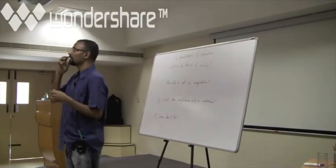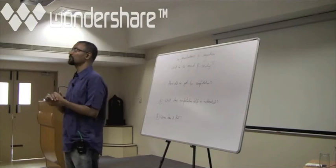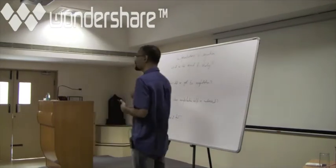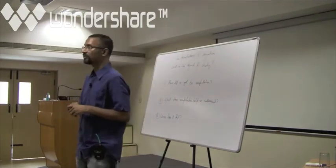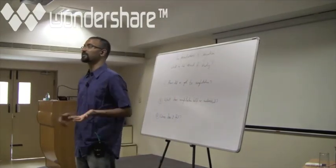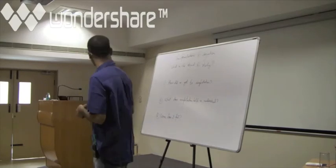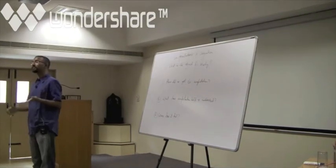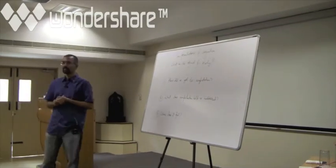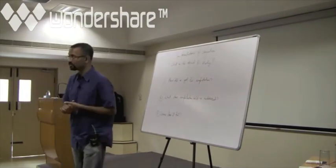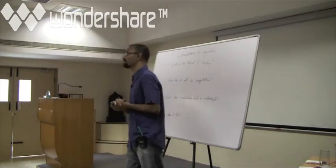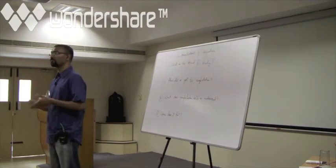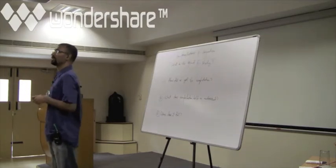I'm going to cover the overall structure of cognition, and then go quickly into understanding how the computational theory of mind works and how that helps us understand questions of cognition. Cognitive science and the study of the mind is unlike, let's say, the study of quarks or the study of nanoparticles in a very essential way, which is that it's both simultaneously old and new at the same time.